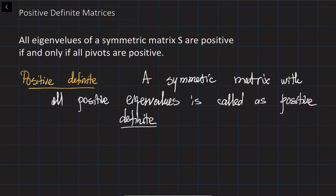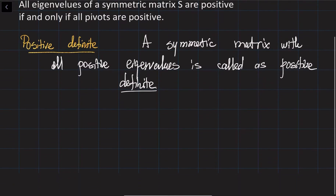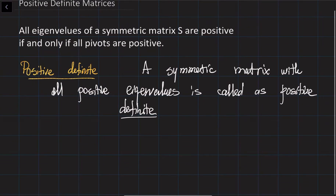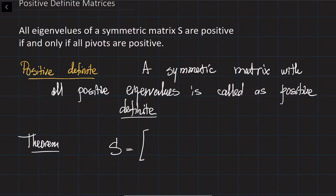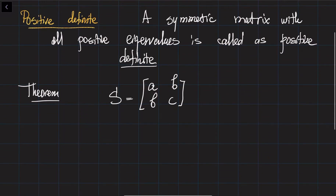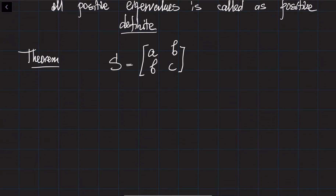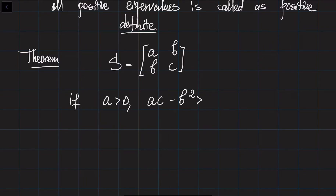Let's discuss how to identify positive definiteness. Here is the theorem. Given a symmetric matrix S equal to [[a, b], [b, c]], S is positive definite if: first, a is positive, and second, a times c minus b squared is positive.